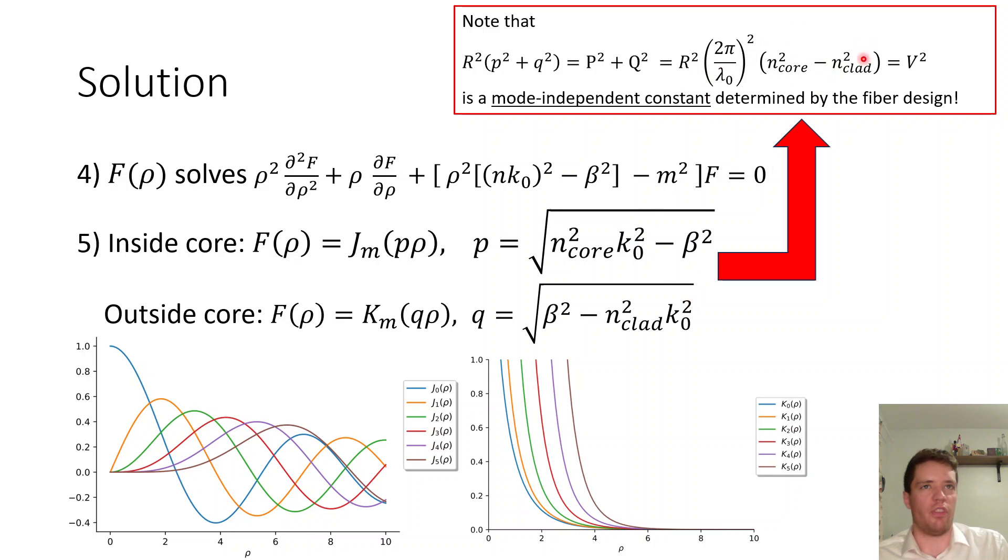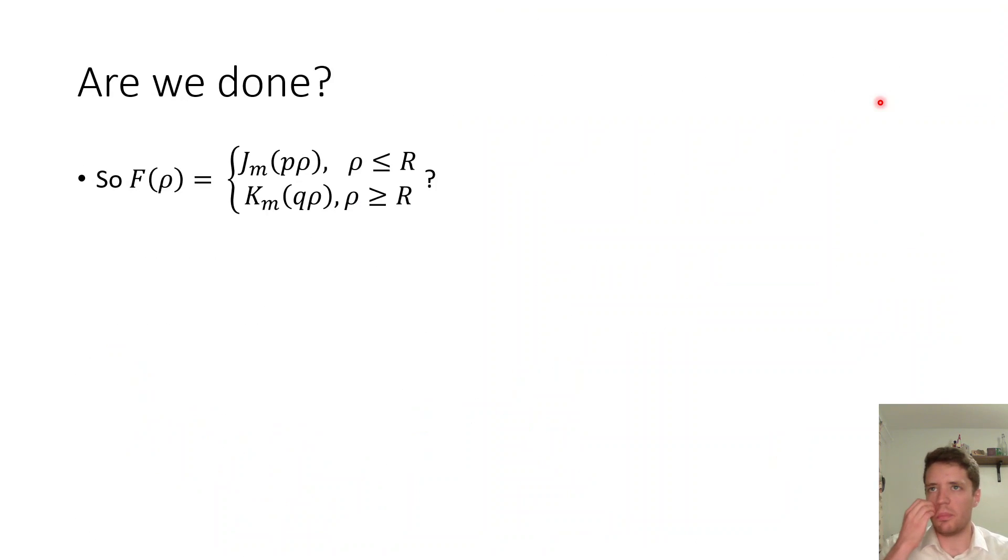Which is independent of the mode so this expression does not depend on beta, it only depends on the design of the fiber through r and the core cladding refractive index difference as well as the wavelength of the light that we're launching in but the point is that if we have a mode with a certain beta value then it can only oscillate so fast inside of the core and have such and such a decay rate outside in the cladding, these are locked together by the design of the fiber that's quite convenient because that allows us to eliminate p and q in subsequent calculations.